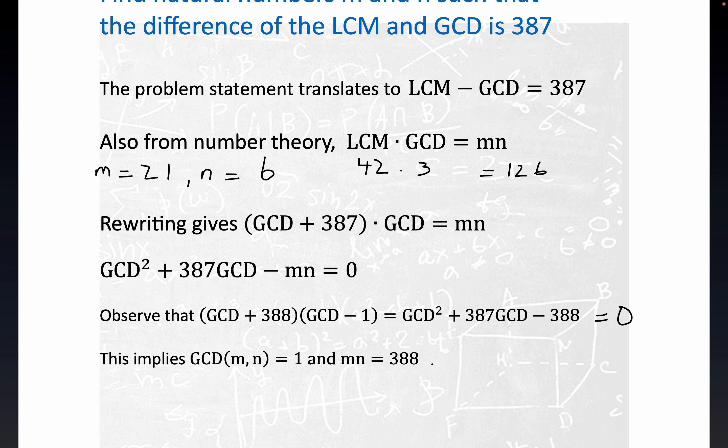First, let's write down the factorization of 388. 388 is 2 times 194. But notice 194 has a factor of 2 that we can take out, and so we get 4 times 97.